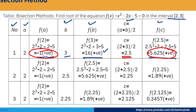For iteration 2: a = 2, f(a) is negative; b = 2.5, f(2.5) is positive. The new midpoint c = 2.25. f(2.25) is positive, so the root still lies between 2 and 2.25, and b becomes 2.25. For iteration 3: a = 2, b = 2.25; f(2.25) is positive, so the midpoint is (2 + 2.25) / 2 = 2.125, and f(2.125) is positive.